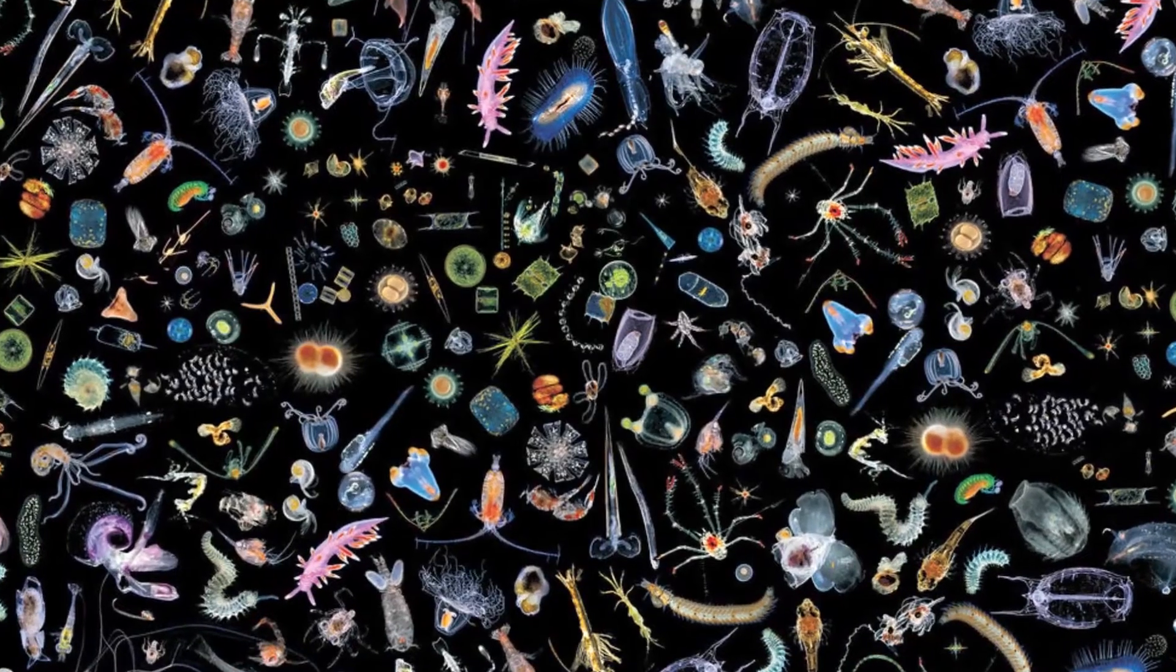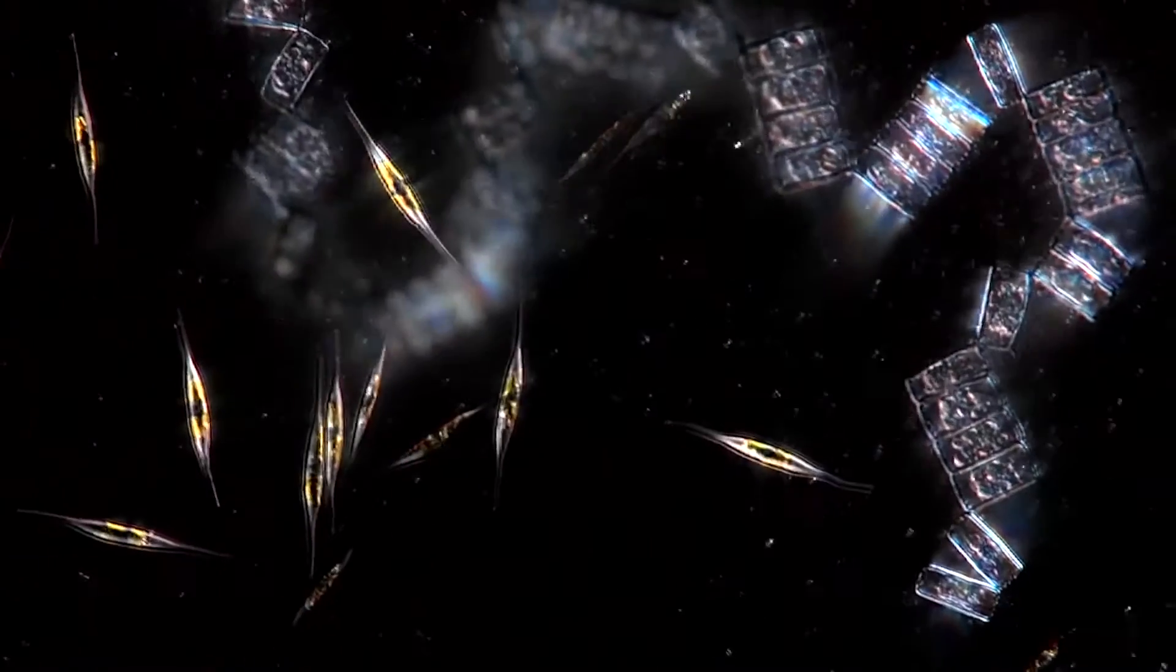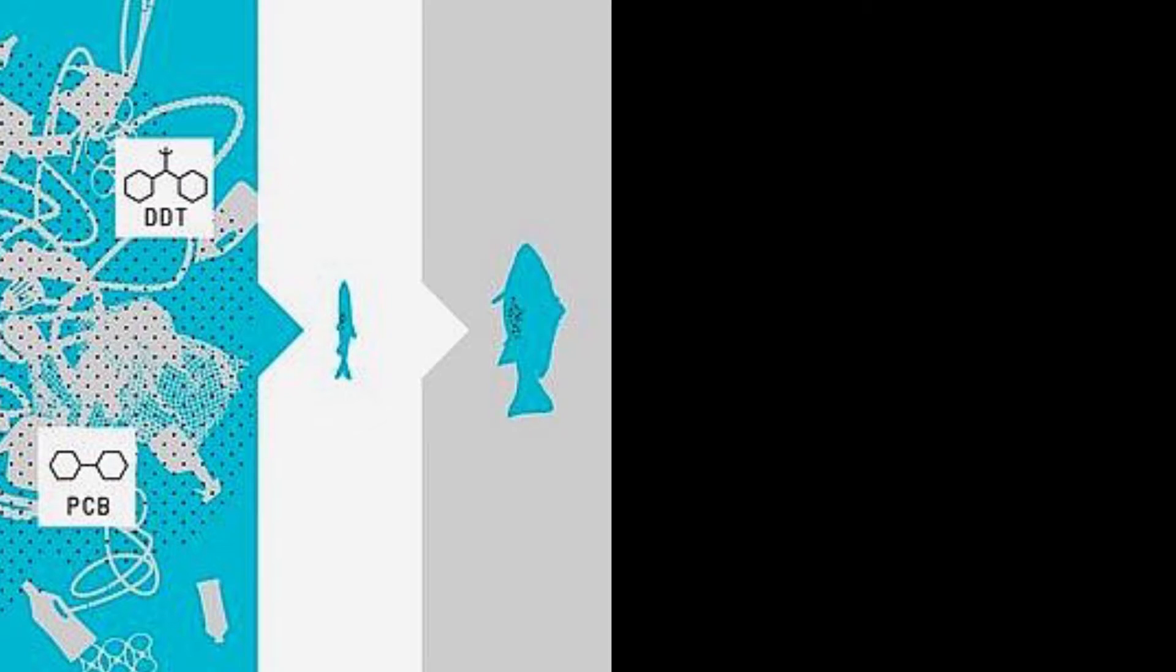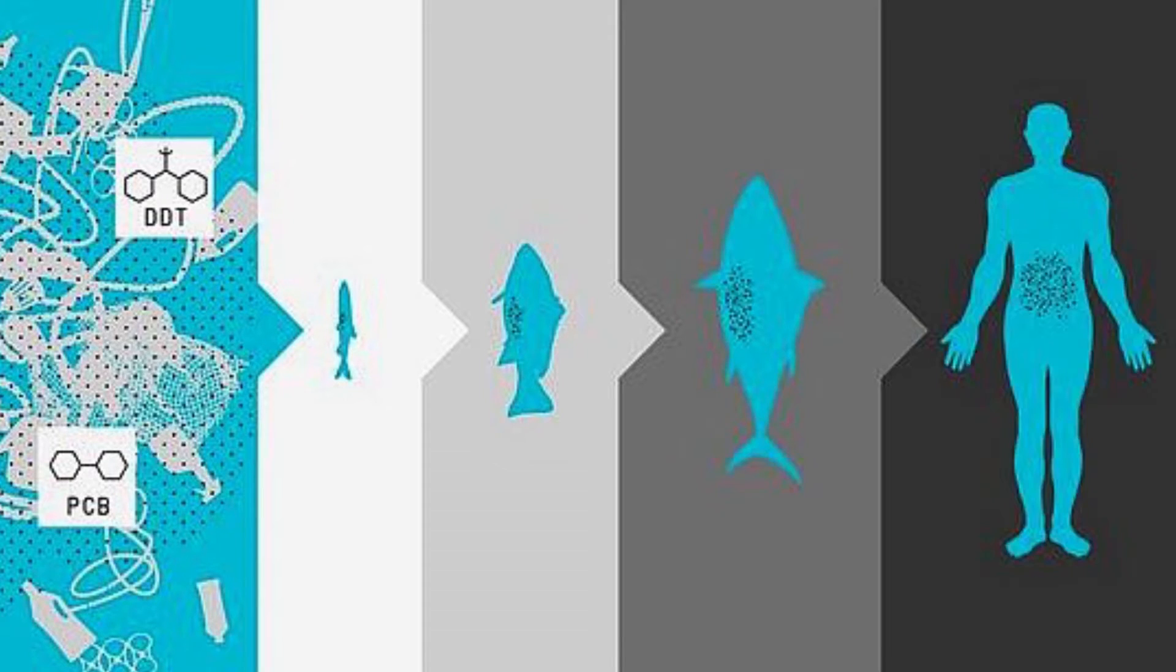This is plankton. Just look at it, so tiny and cute and stuff. Plankton is eaten by small fish. These small fishes are eaten by bigger fishes, which are then eaten by even bigger fishes, or us.